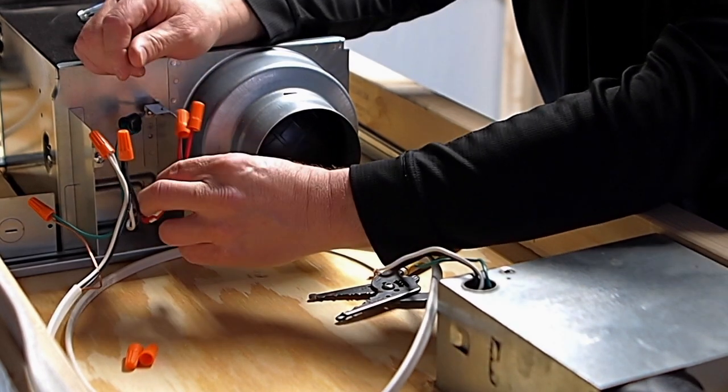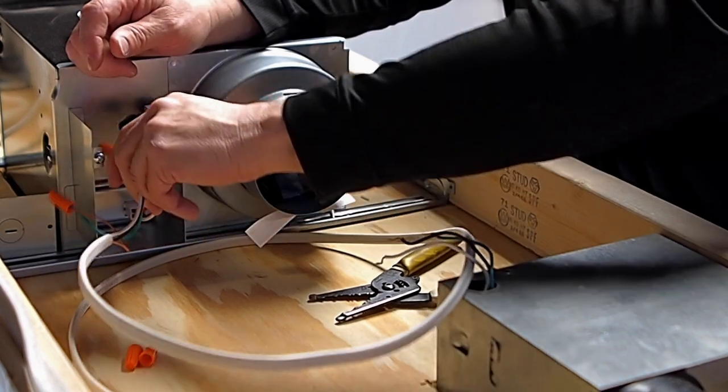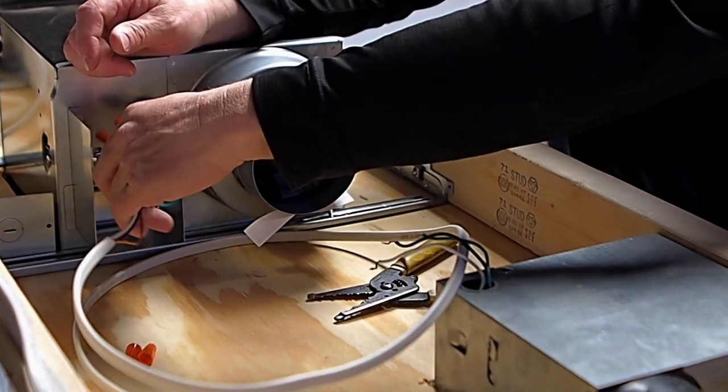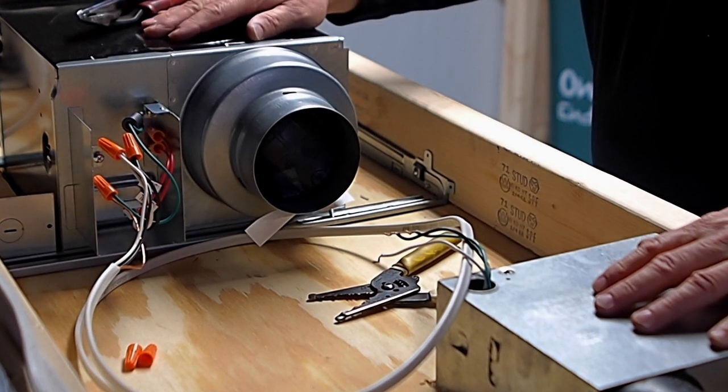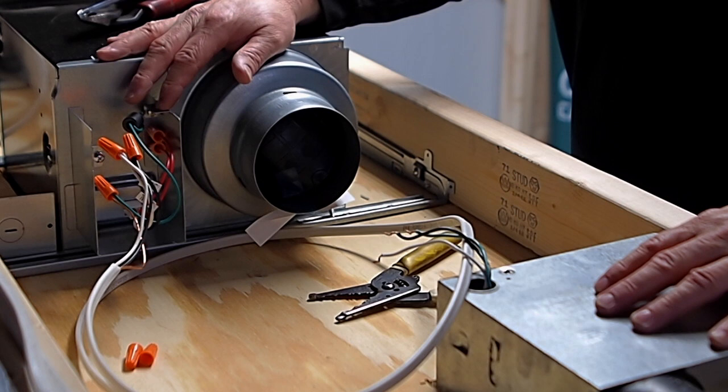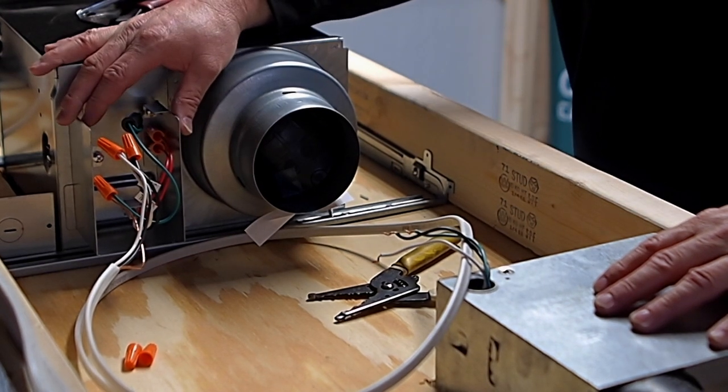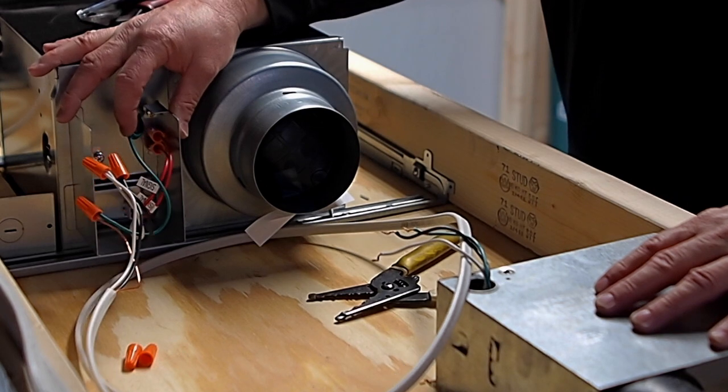And then all those wires will just get stuffed back in the box. So now we have this fan when we turn the breaker on we'll have constant power. It will be running at a low continuous CFM and it will also be activated by that motion sensor when anybody walks into the room and then it'll ramp up and tackle spot ventilation.